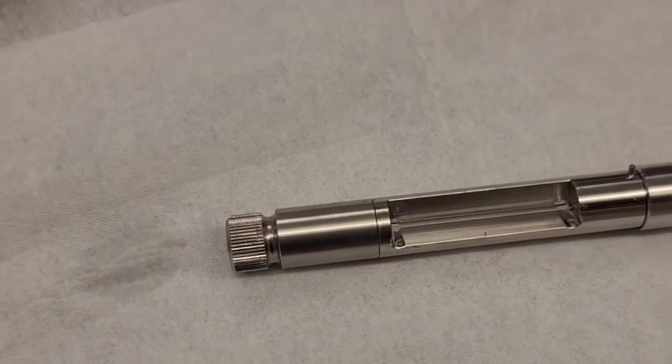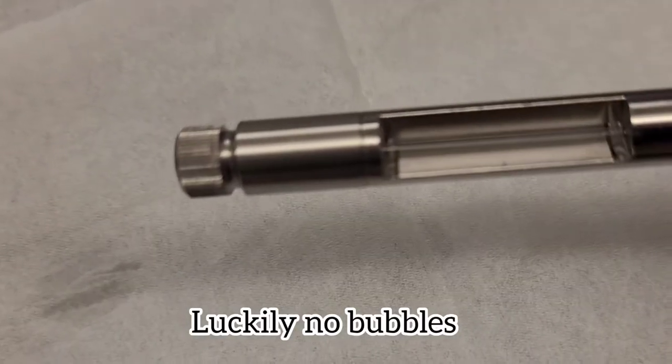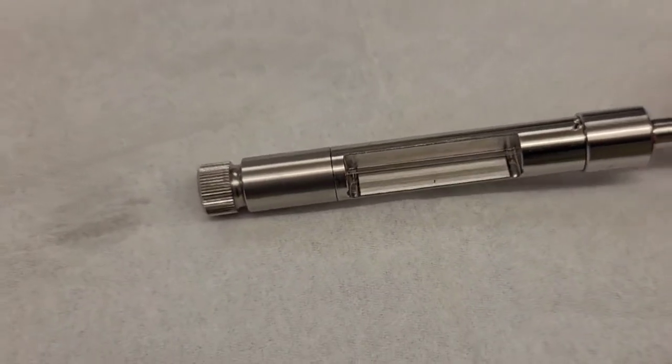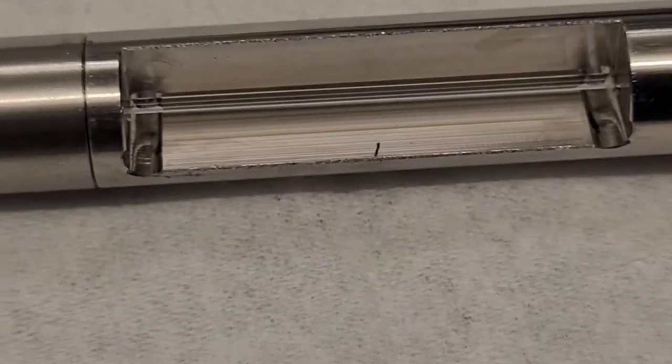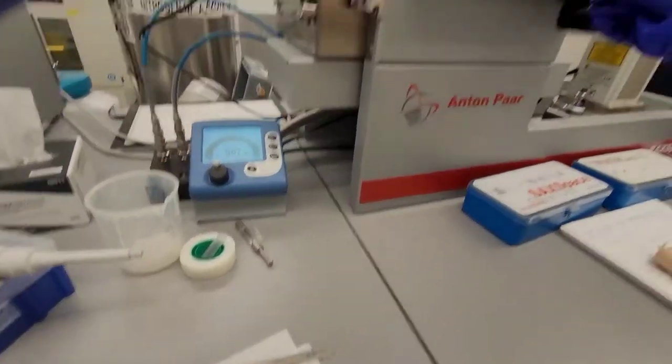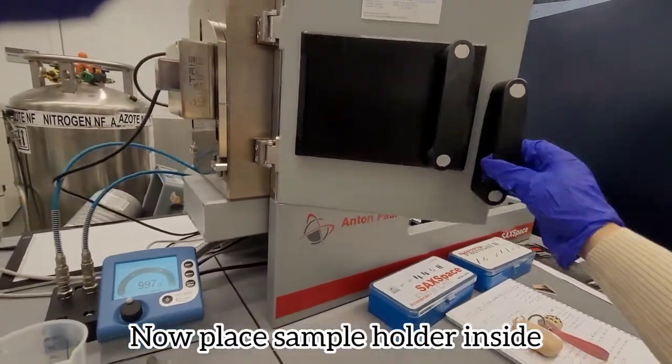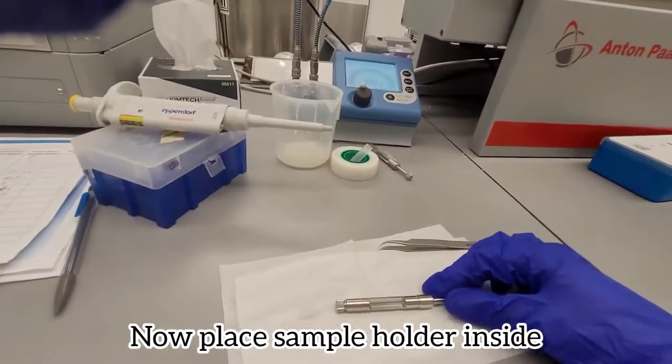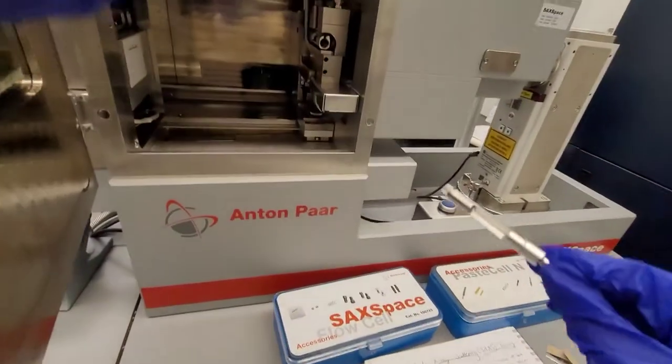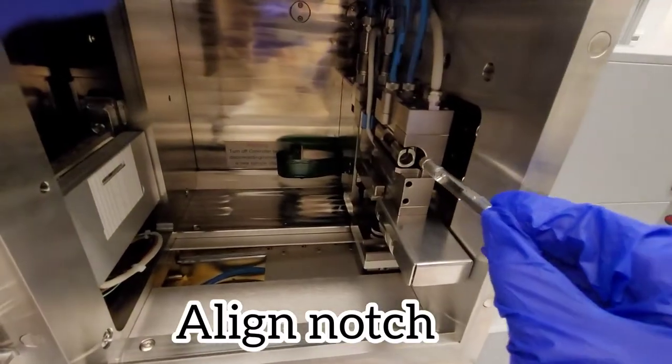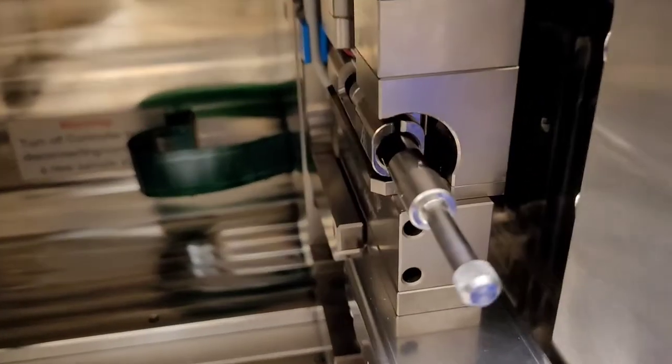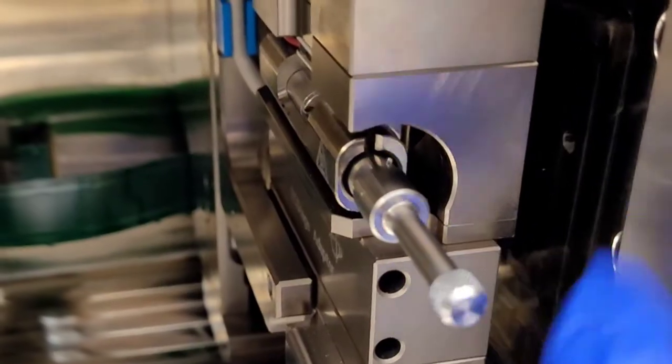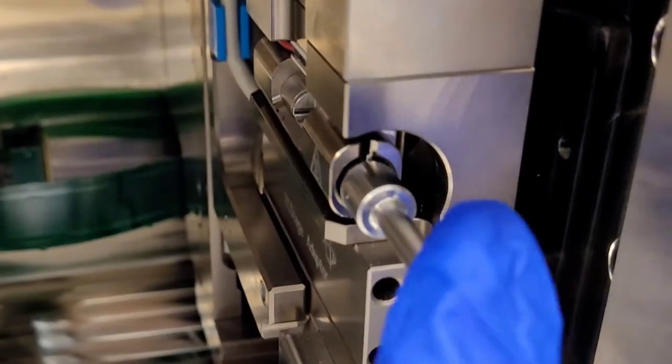This is the hardest part when it comes to loading the sample and make sure there are absolutely no bubbles because that would introduce artifacts into your spectra. Then you put the sample holder in and when you do that you have to make sure the notch aligns. There's only one correct way to do it, and you can see it here.